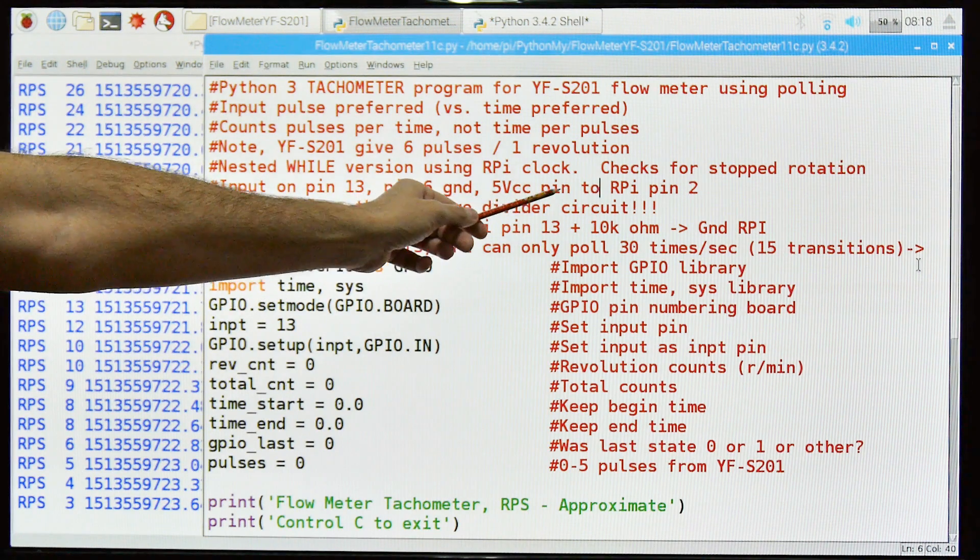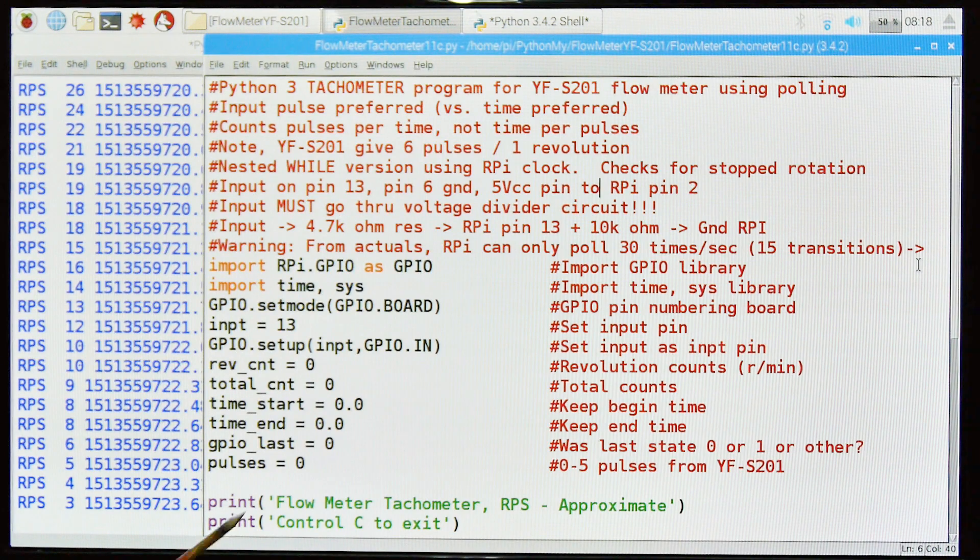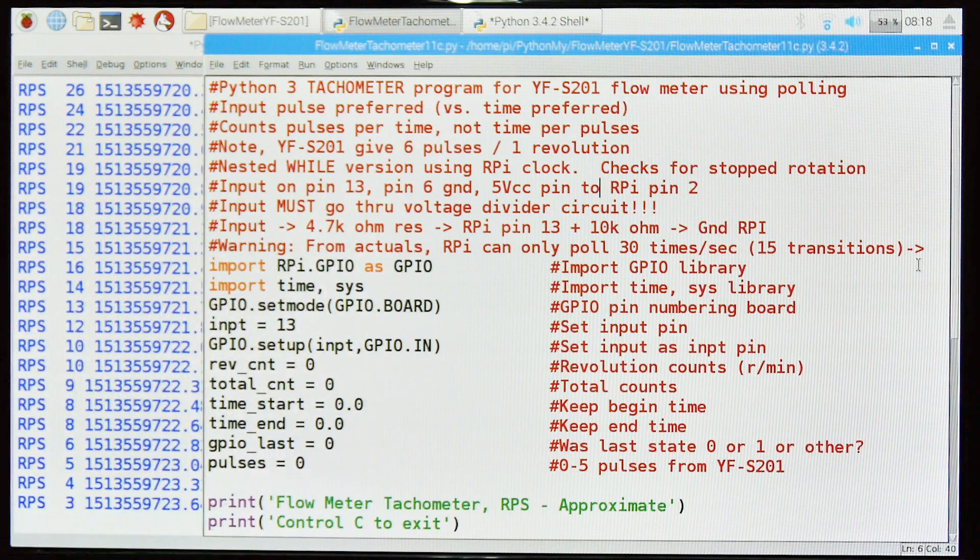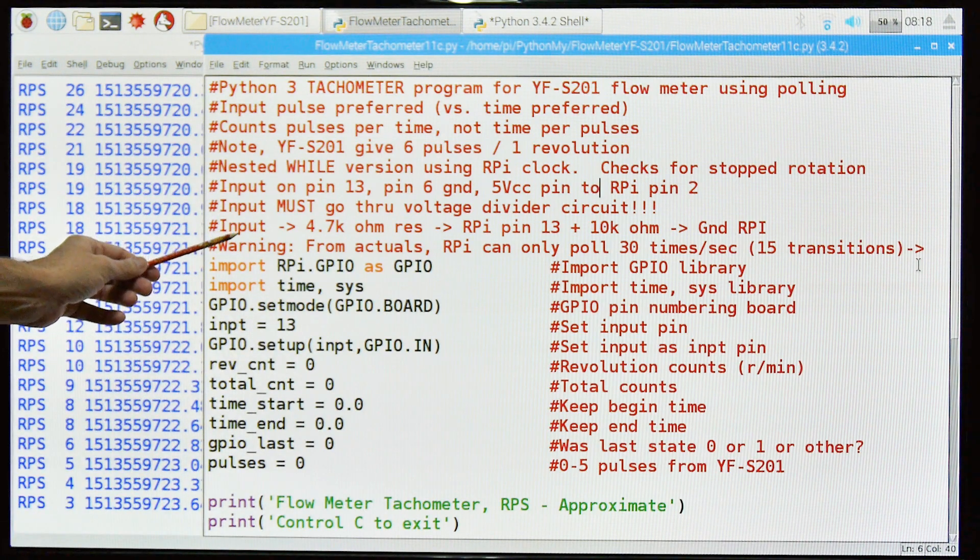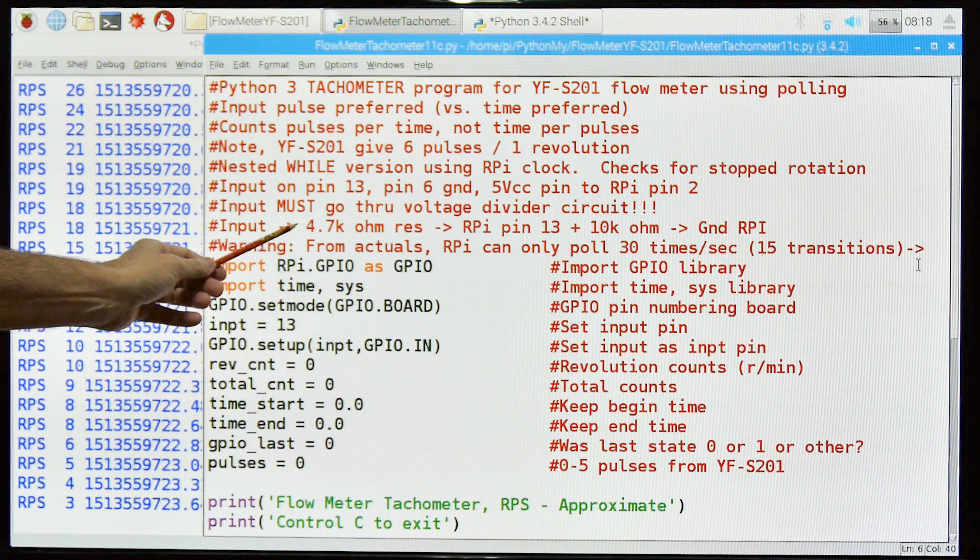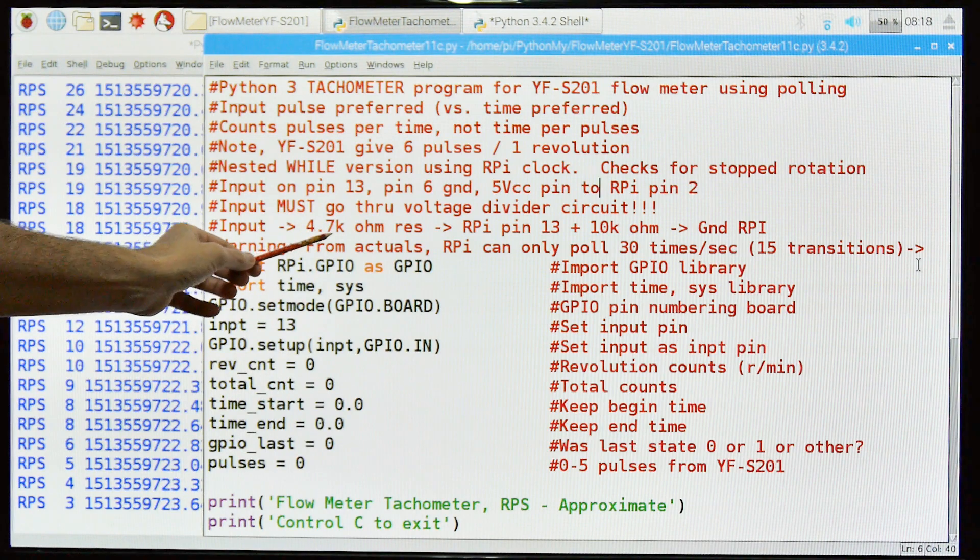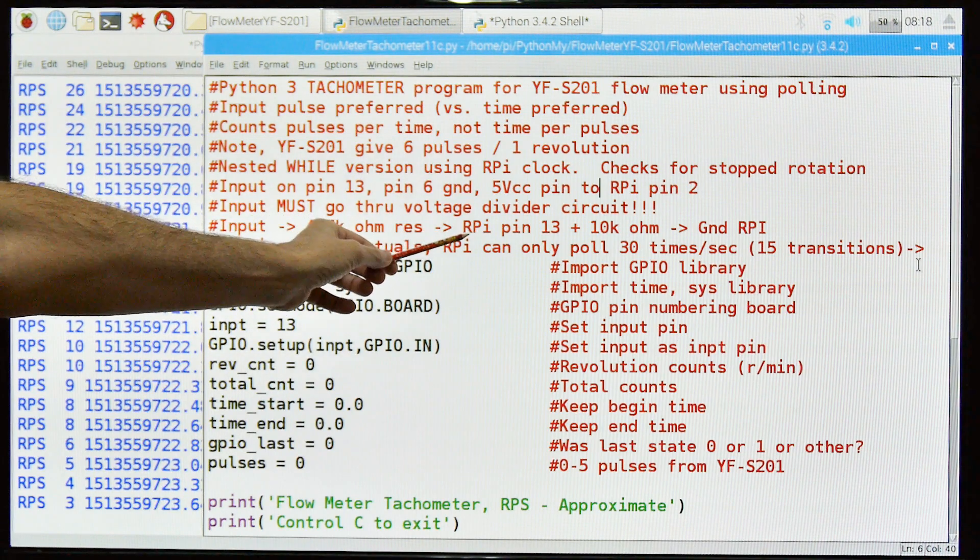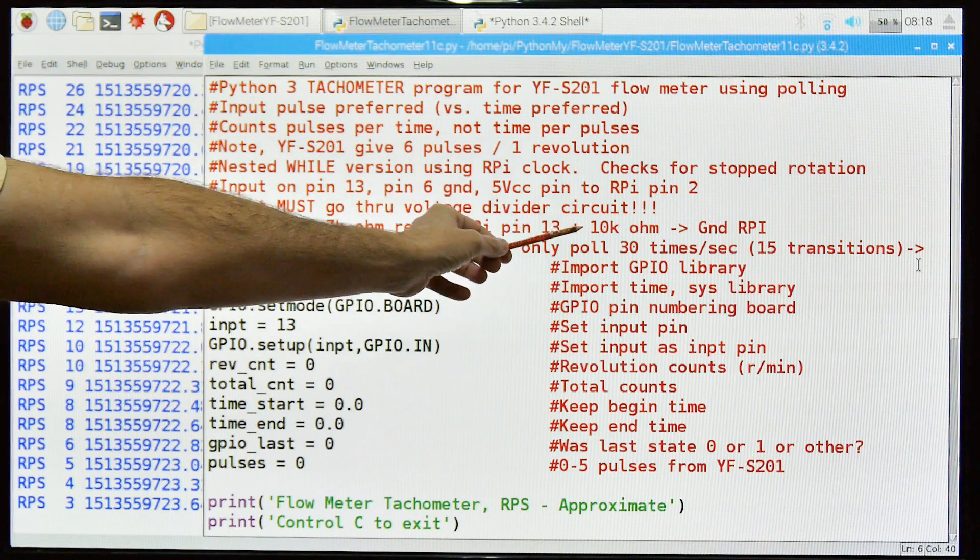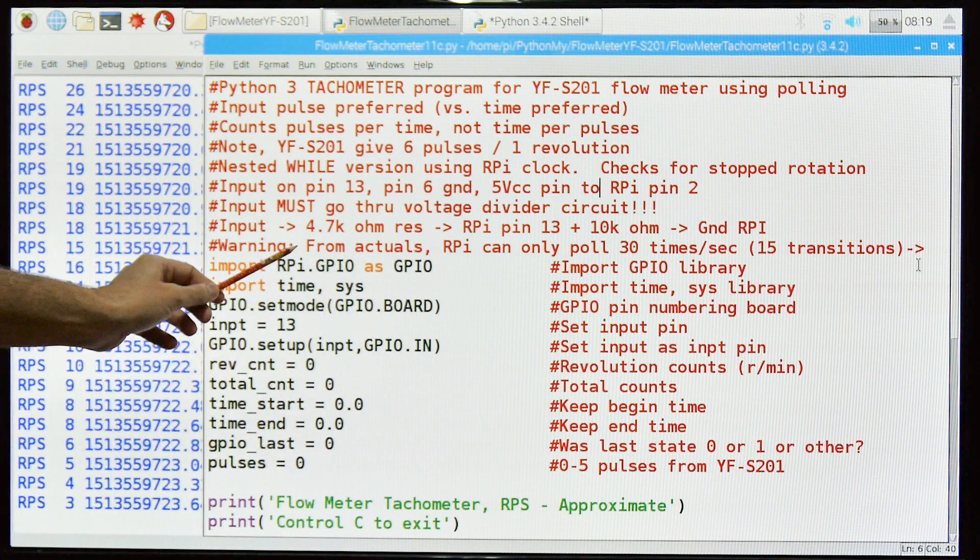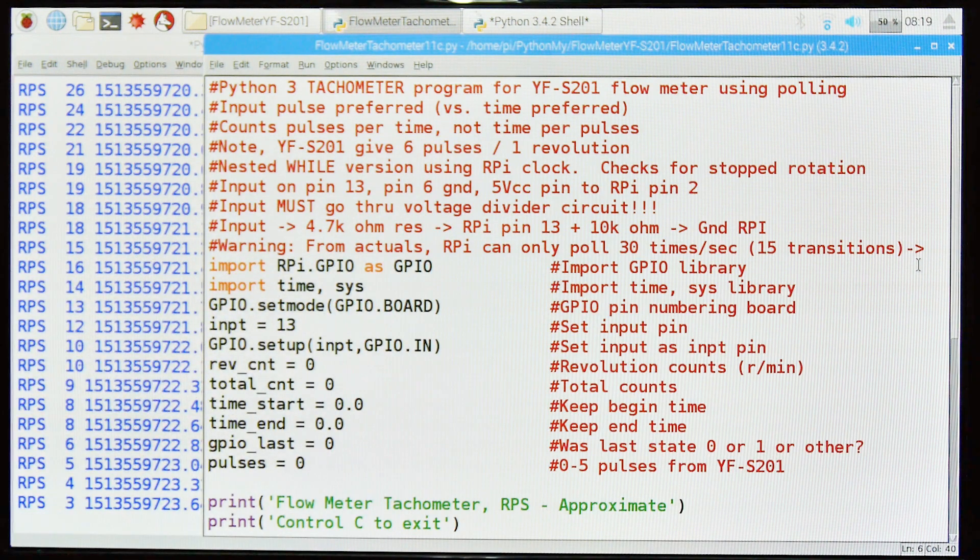The input is on pin 13, pin 6 ground. I also sometimes use pin 9, I think I use pin 9 this time around for ground, but any of the grounds will work. The 5 volt CC pin to the RPI is pin 2. The input must go through a voltage divider circuit. You cannot put 5 volts directly from the Pi back into the Pi. You will fry your Pi, trust me. There's a 4.7K ohm resistor from the power that goes to Pi pin 13, then a 10K ohm resistor that goes to ground on the RPI. I'll put a diagram at the end of the video.